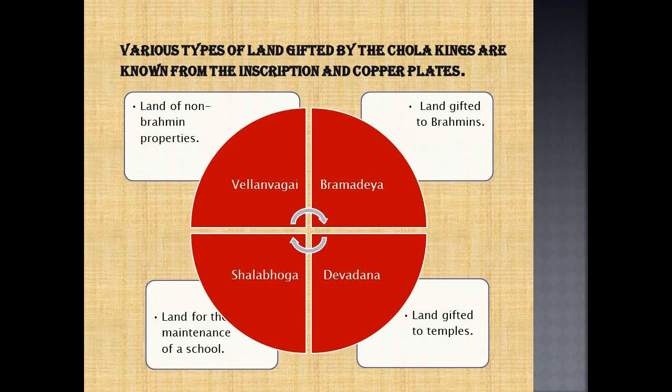The Thiruvelangadu plates of Rajendra Chola I and the Anbil plates of Sundar Chola are notable examples. The Uttaramerur inscriptions in Kanchipuram district provide details of the way in which village administration was conducted. Various types of lands gifted by the Chola kings are known from inscriptions and copper plates: Velanvagai — land of non-Brahmin properties; Brahmadeya — land gifted to Brahmins; Shalaboga — land for the maintenance of a school; Devadana — land gifted to temples.